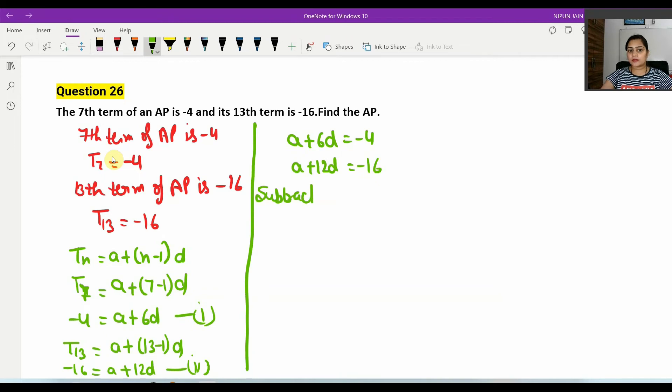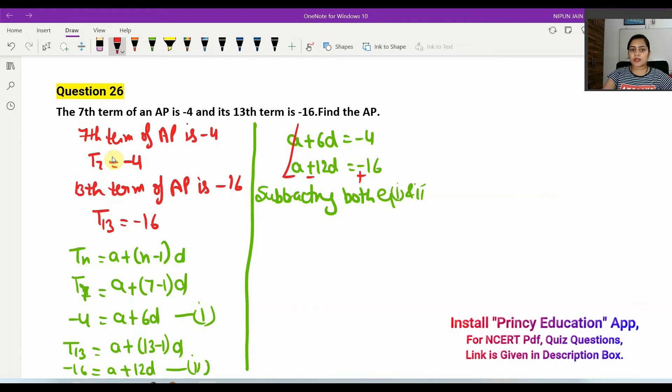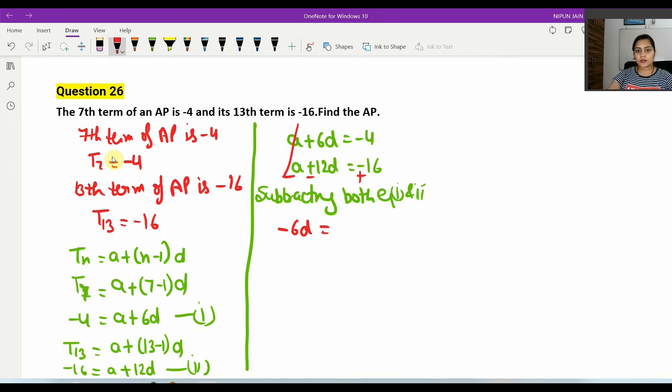Subtracting both equations, when we subtract equation 2 from equation 1, this will cancel out the a terms. 6d minus 12d equals minus 4 minus (minus 16). So minus 6d equals 12, which means d equals minus 2.